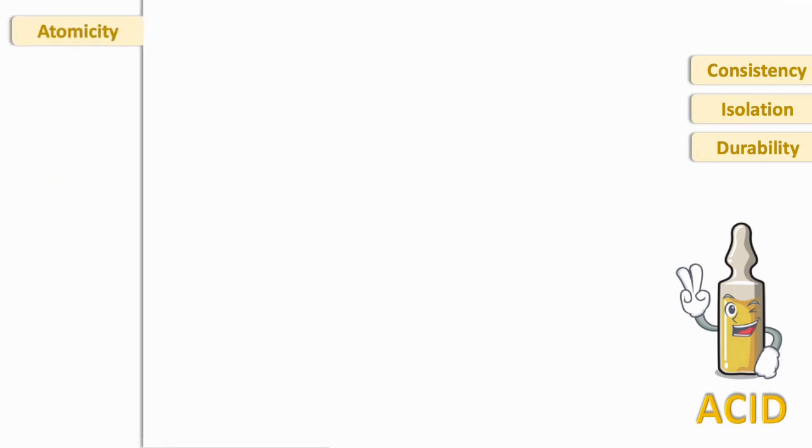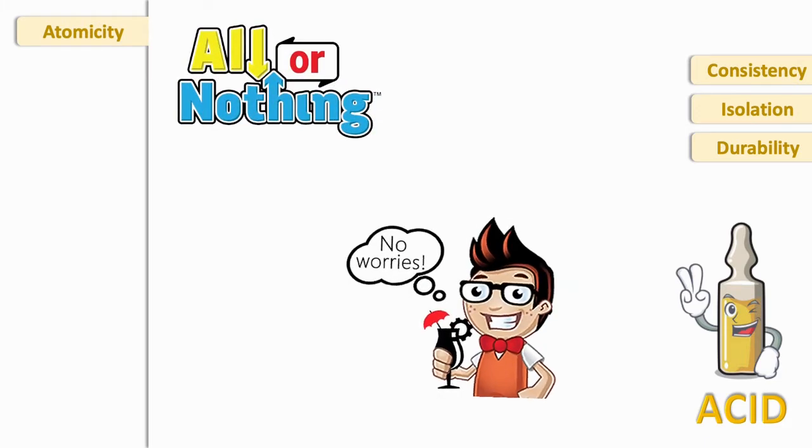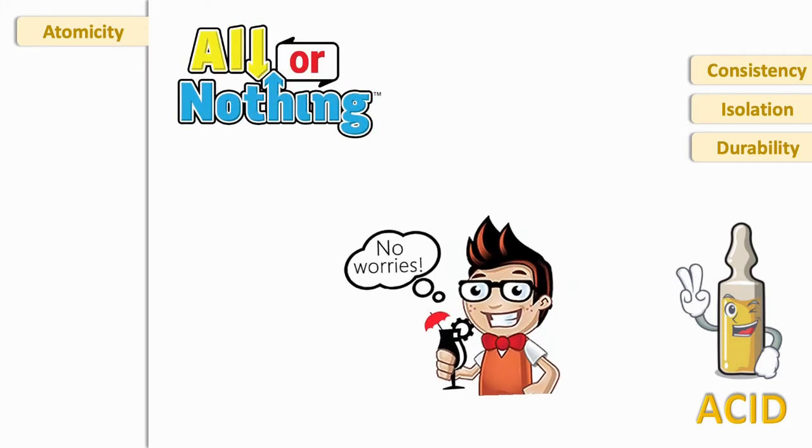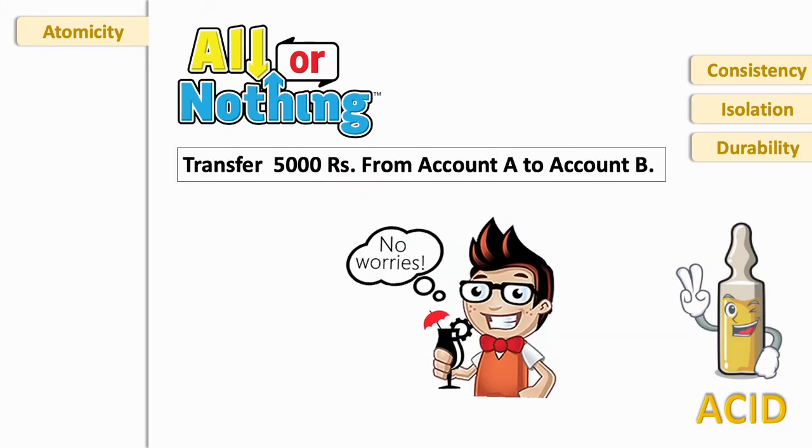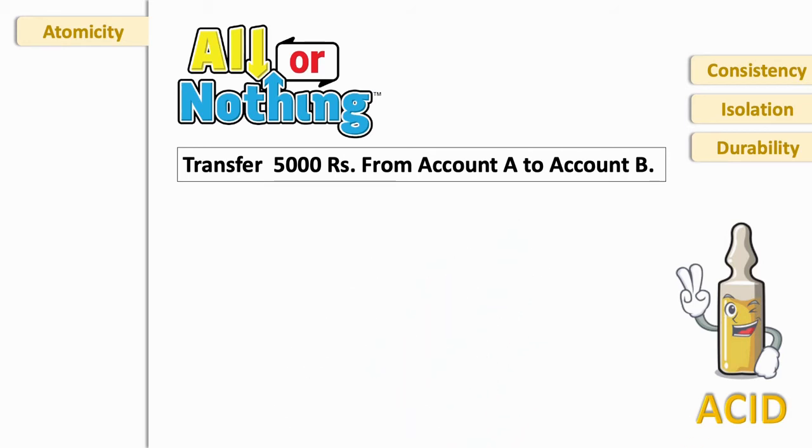First is atomicity. Atomicity says either all actions are carried out or none. Users should not have to worry about incomplete transactions. For example, five thousand rupees has to transfer from account A to B.